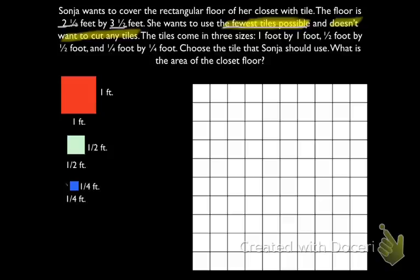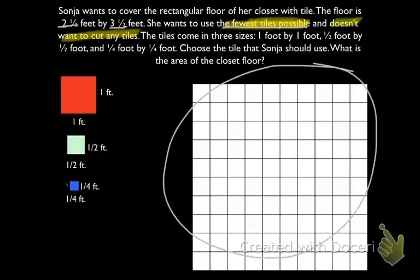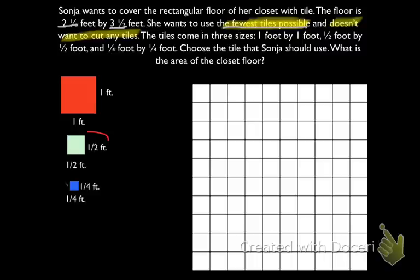So essentially what we're trying to do is draw Sonia's rectangular floor on this grid and find the total area using half-foot tiles. We're using half-foot square tiles to cover Sonia's rectangular floor. For each grid square, let's have one square represent the dimensions of the tiles we chose. So each square is going to have a length of one half and a width of one half. Let's draw a diagram of the floor.